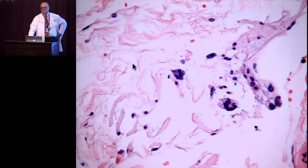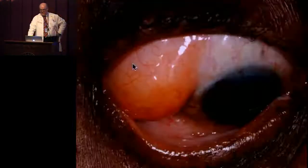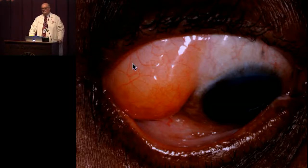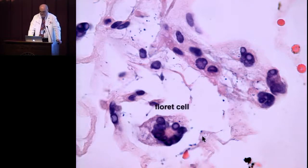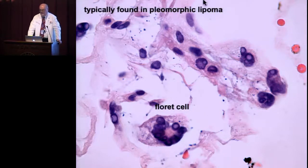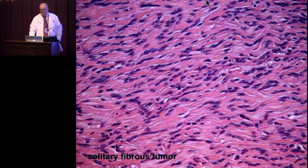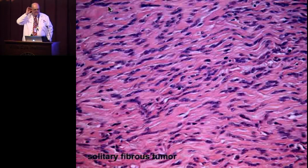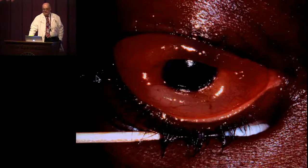Here is a patient with a primary orbital myxoma. A patient with herniated orbital fat had characteristic floret cells — multinucleated florets — also found in pleomorphic lipoma, and a characteristic finding in herniated orbital fat. A fibrous histiocytoma with massive proptosis underwent malignant transformation. Solitary fibrous tumor has a patternless pattern, in contrast to the storiform pattern of fibrous histiocytoma, with stout bands of collagen staining positively with CD34.